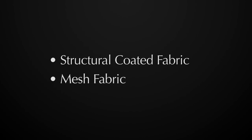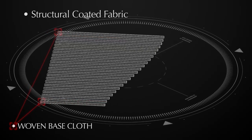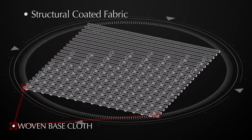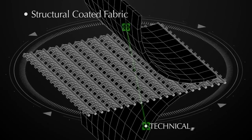In general, we use two generic types of fabrics, structural coated fabrics and mesh fabrics. Structural coated fabrics consist of a woven base cloth made of warp threads that run the length of the roll and fill threads across the width. This base cloth is then covered by a protective layer on both sides.